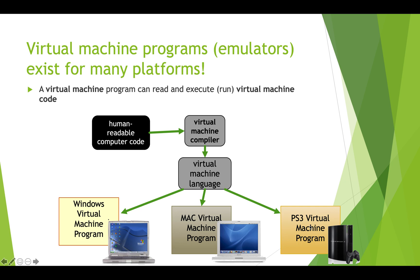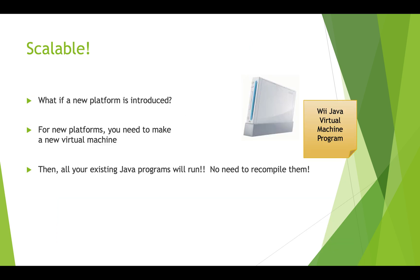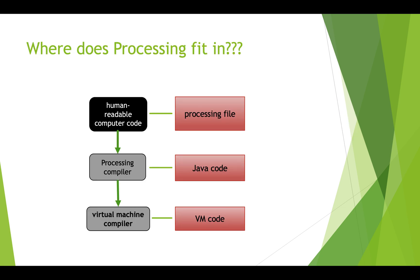This is how Java works. When a new platform is introduced, we create a Java virtual machine for that platform and put it on there. For example, here's the Nintendo Wii — we put the Java virtual machine on it, and then any existing Java programs, because they've compiled to the virtual machine language, can just load and run. We don't need to recompile them. So this is really great.